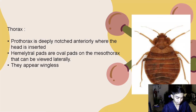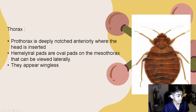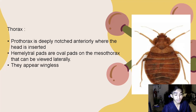Next is the thorax, which is where the head is implanted. The prothorax is strongly grooved anteriorly where the head is attached. Hemelytral pads are oval pads on the mesothorax that can be viewed laterally. They are paired but wingless, being reduced to form hemelytral pads, and the hind wings are absent.